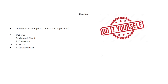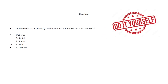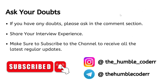Now I have two DIY questions — you have to answer these yourself in the comment section and I will reply whether you are correct or not. Don't think others are watching so why should I comment — if you are preparing sincerely, comment honestly. Question 1: What is an example of a web-based application? Options: Microsoft Word, Photoshop, Gmail, Microsoft Excel. Question 2: Which device is primarily used to connect multiple devices in a network? Options: switch, router, hub, or modem. Comment your answers below.